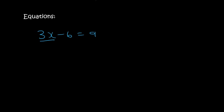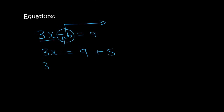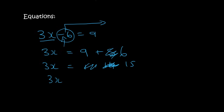These are the easy ones that you might have started doing in grade 6, maybe grade 7, definitely grade 8. All you do is try to get all the x's on one side and all the numbers on the other side. So this 6 over here needs to move over. When it does, it becomes the opposite sign — it was negative, now it becomes positive. So then we get 3x equals 15. We divide both sides by 3 to get x by itself, and so x equals 5.